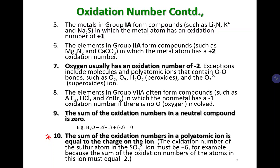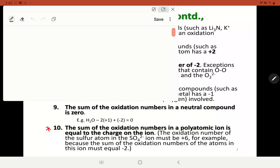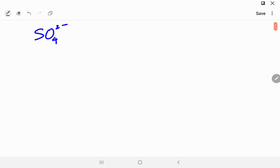Rule number 10 is very similar to rule number 9, which we discussed in detail in the second video. The only difference between rule number 9 and rule number 10 is that rule number 9 was about neutral compounds, while rule number 10 is about charged compounds, or polyatomic ions. According to rule number 10, the sum of oxidation numbers in a polyatomic ion is equal to the charge on the ion.